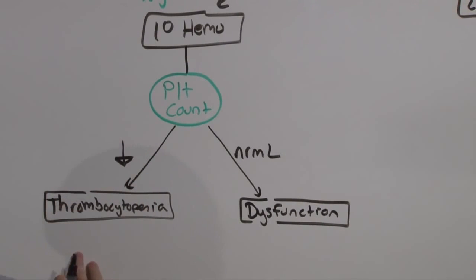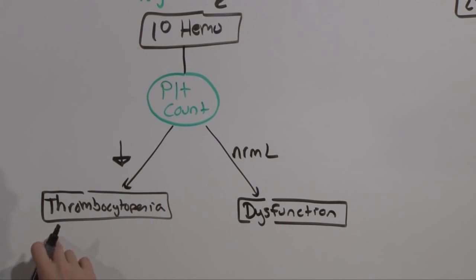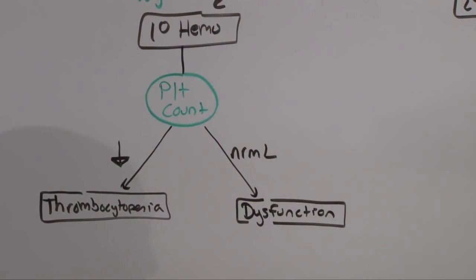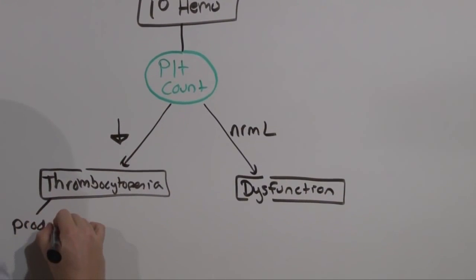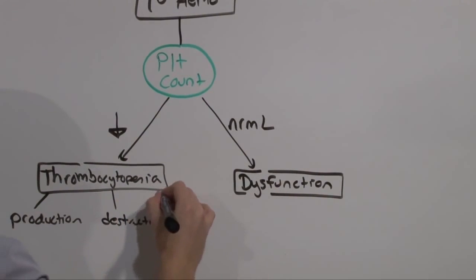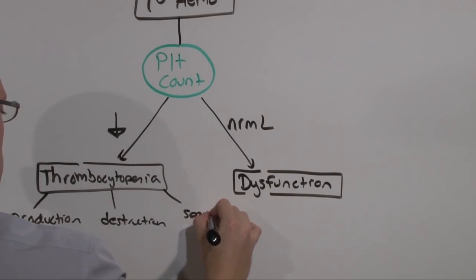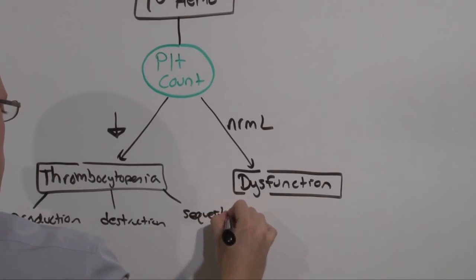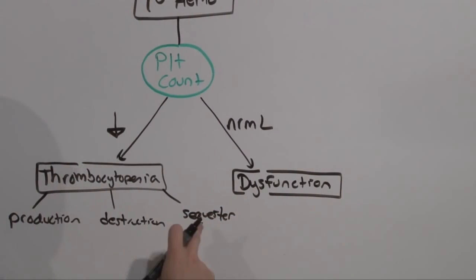Thrombocytopenia can be its own lecture in entirety. But I want you to see that whenever you don't have enough of something in the body, it only happens in three ways. Either you don't make enough, it's being consumed, or it's hidden. That is production, destruction, and sequestration.